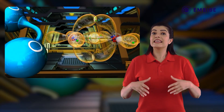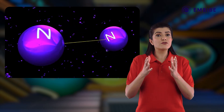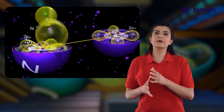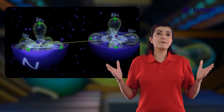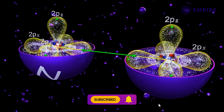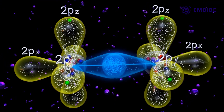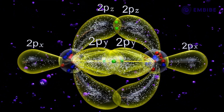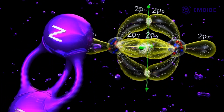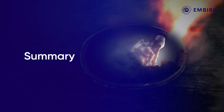Therefore, a pi bond is always weaker than a sigma bond. In a molecule of oxygen, the double bond consists of one sigma and one pi bond. Now for nitrogen, with electronic configuration 1s² 2s² 2px¹ 2py¹ 2pz¹, there are three half-filled p orbitals to be paired. The atoms approach along the x-axis; the 2px orbitals overlap axially to form a sigma bond, while the 2py and 2pz orbitals undergo lateral overlap forming two pi bonds — giving nitrogen's triple bond as one sigma and two pi bonds.